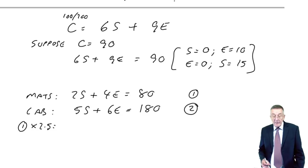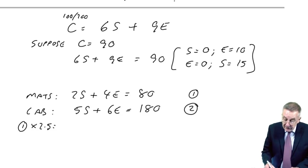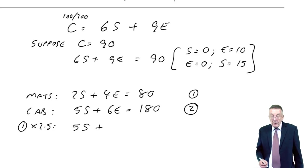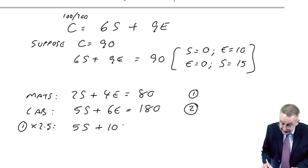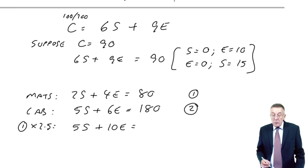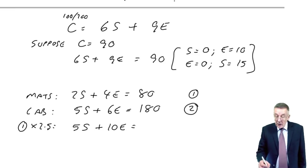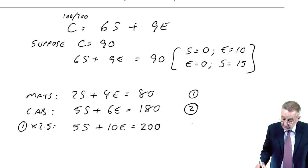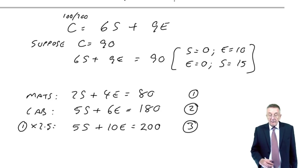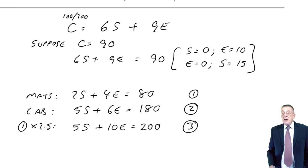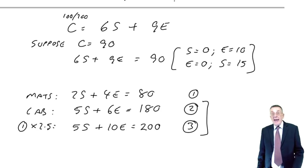2.5 times 2s is 5s. 2.5 times 4e is 10e. 2.5 times 80 is 200. And the reason I chose 2.5 is I've now got two equations which both have 5s in them.